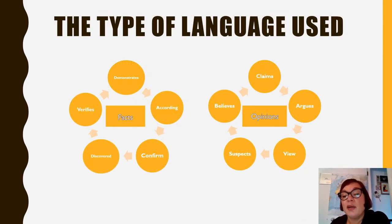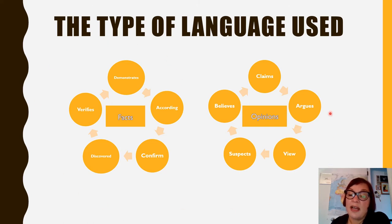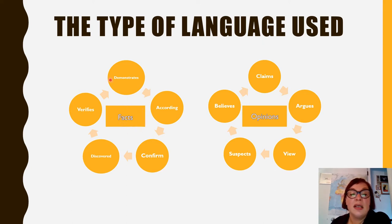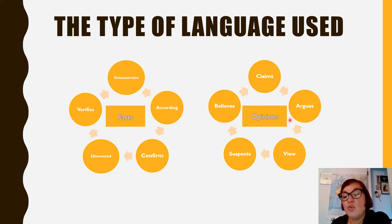Now, the type of language used — you should try to look out for these types of words to identify if it's fact or opinion. When looking for factual writing, the text will use words like 'demonstrate,' 'according,' 'confirm,' 'discovered,' 'verifies.' When it's an opinion piece, you will see words like 'claims,' 'argues,' 'views,' 'suspects,' 'believes.'